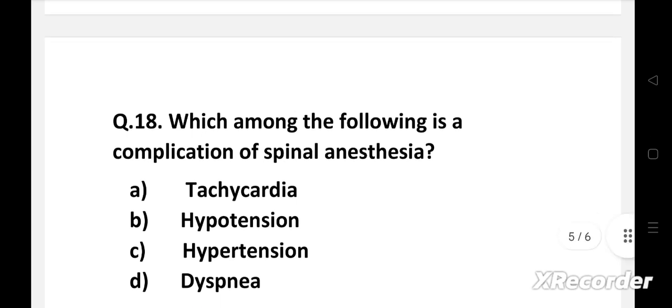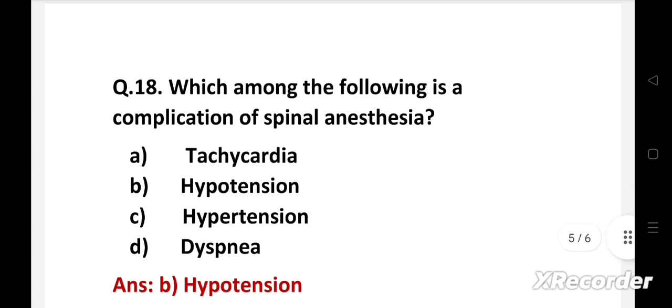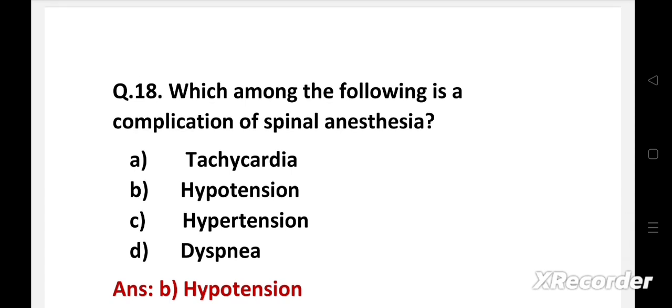Right answer is option B: Hypotension. One of the most common neurological complications after spinal anesthesia is hypotension. Hypotension after spinal anesthesia is a physiological consequence of sympathetic blockade.